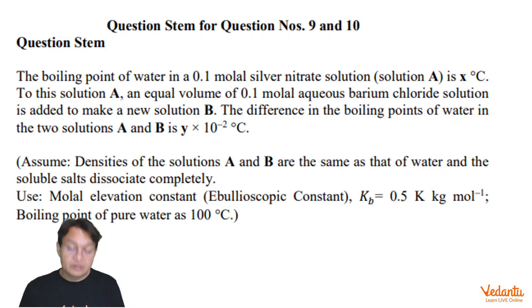The boiling point of water in a 0.1 molal silver nitrate solution, solution A, is x degree centigrade. To this solution A,